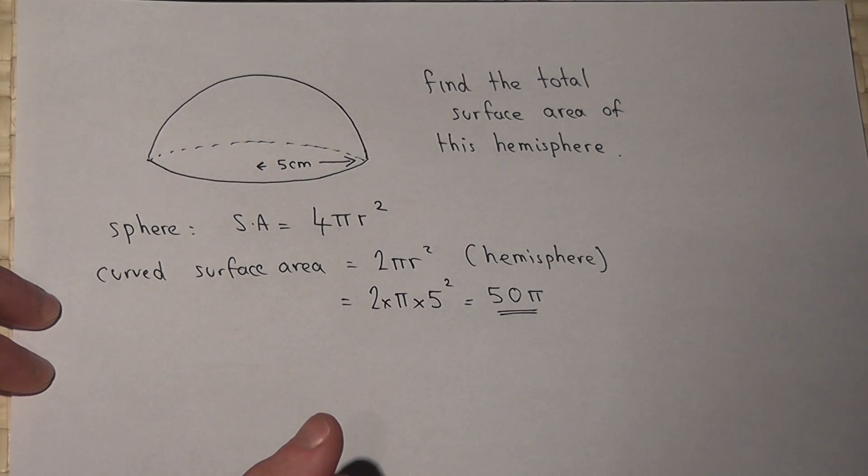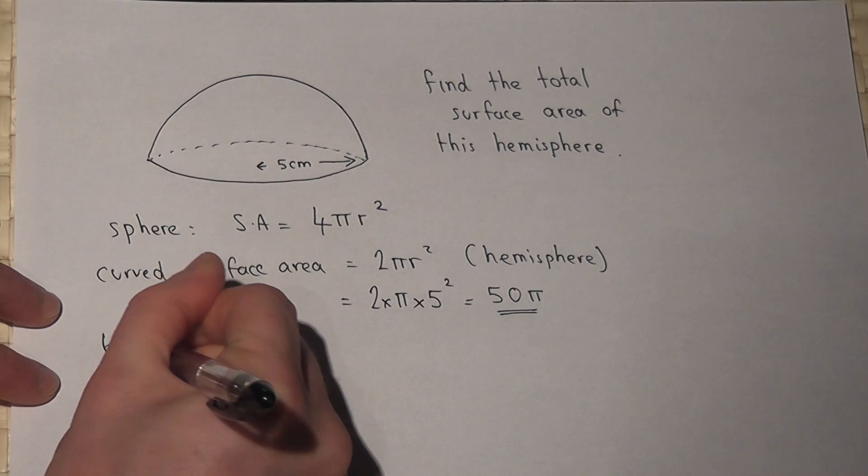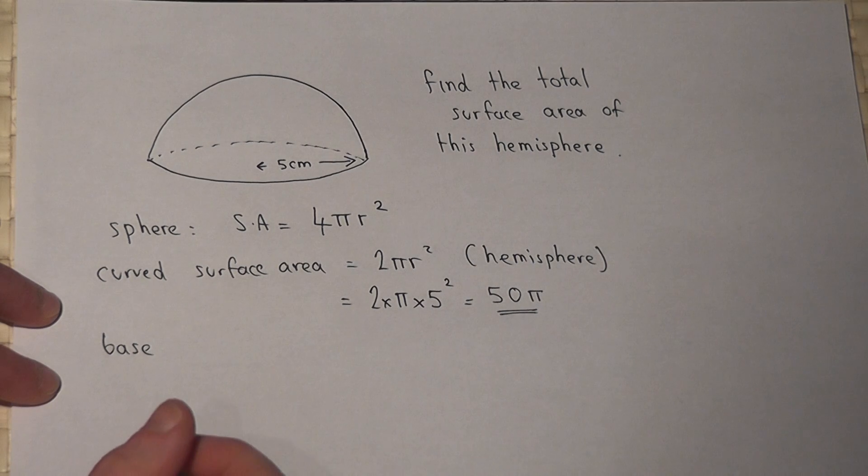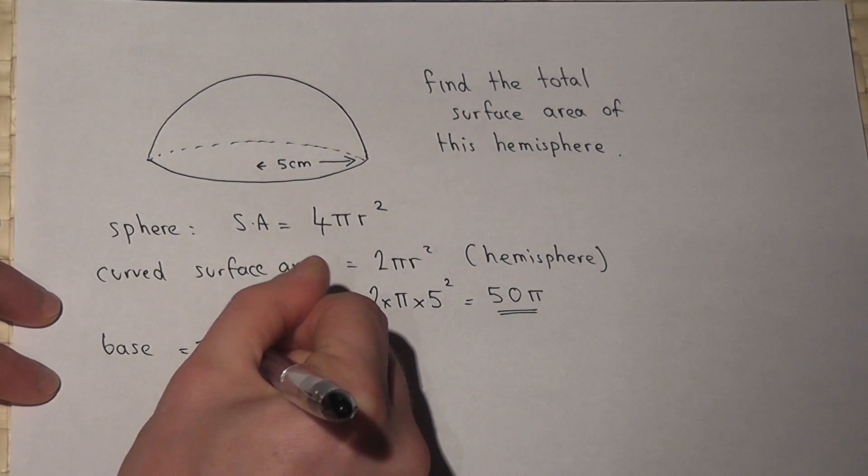However, a hemisphere has also got a flat base. Now this base is a circle, so the area of the circle is just pi times r squared.